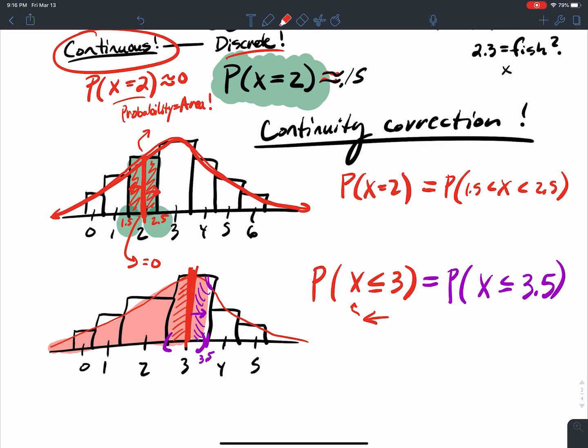So the continuity correction is x less than or equal to 3.5. That way, we get everything in x equals 0, 1, 2, and 3.